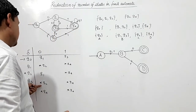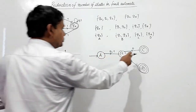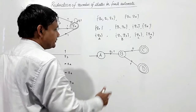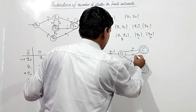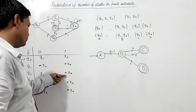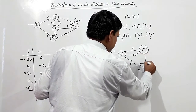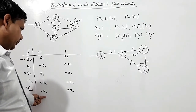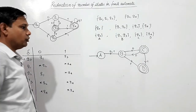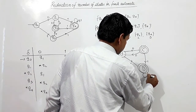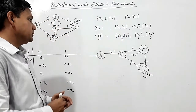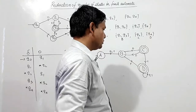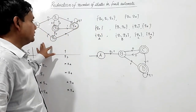Q3 is also in state B — same situation. C (which is Q2) on 0 goes to Q1, and Q1 is in B. On 1 it goes to Q4, and Q4 is D. D (which is Q4) on 0 and 1 remains in Q4, so D on both 0 and 1 goes to D. This completes the transition table for states A, B, C, and D. This is the minimal DFA for the given DFA.